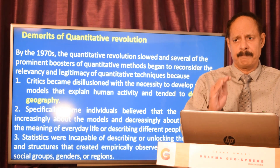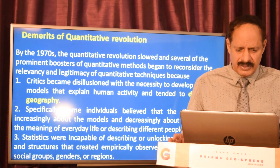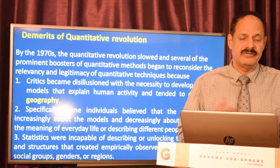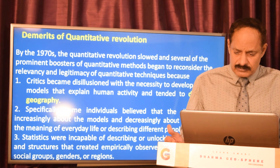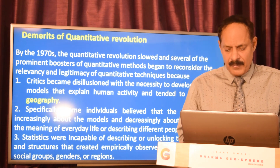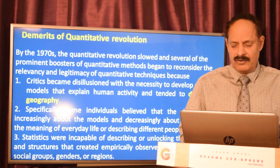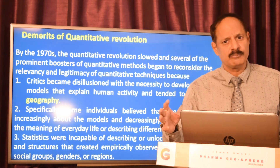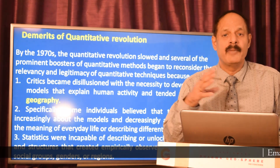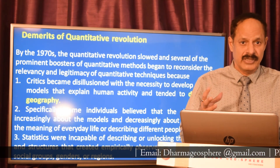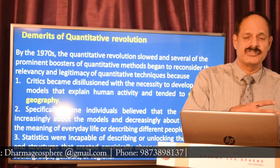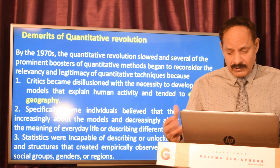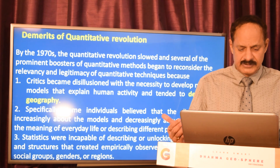Some of the demerits: some human geographers felt quantification was dehumanizing geography, and some believed the discipline was increasingly about models and decreasingly about understanding the meaning of everyday life or describing different peoples and regions. The human interface was becoming mechanical. Additionally, statistics were incapable of describing or unlocking the mechanisms and structures that created empirically observed differences between social groups, genders, and regions.